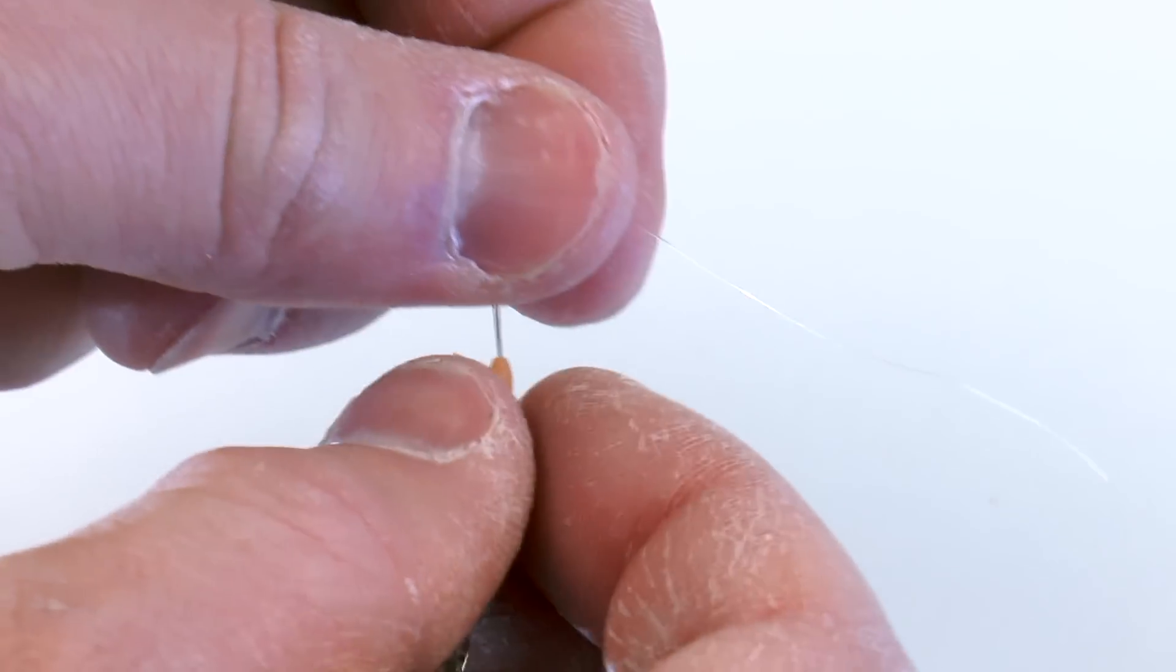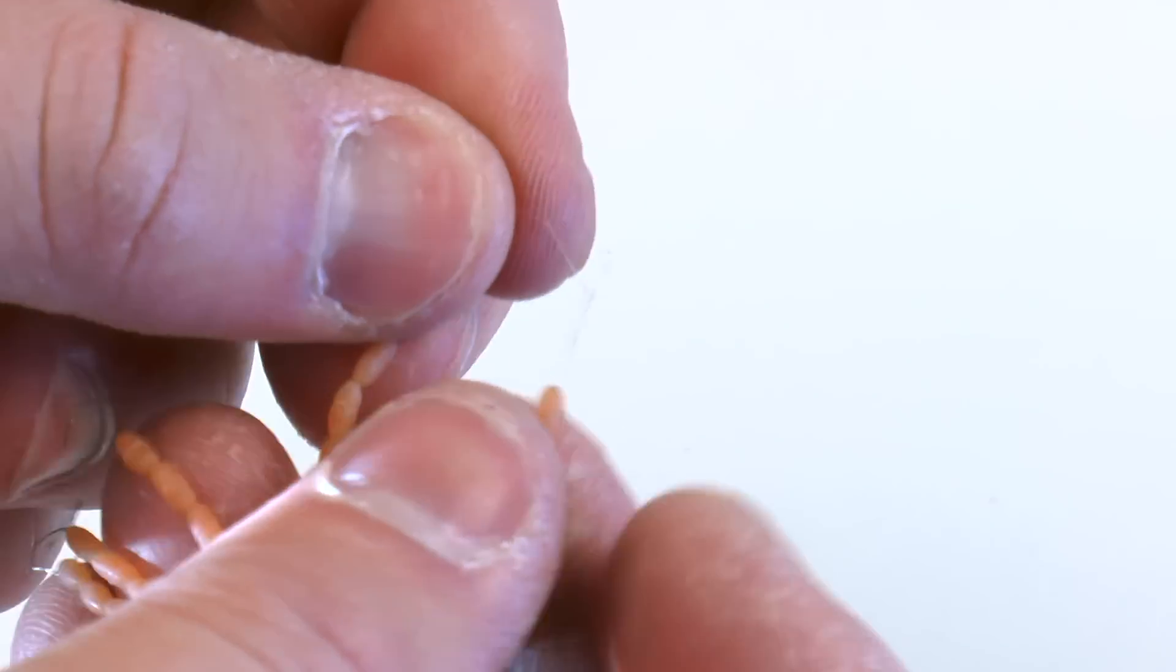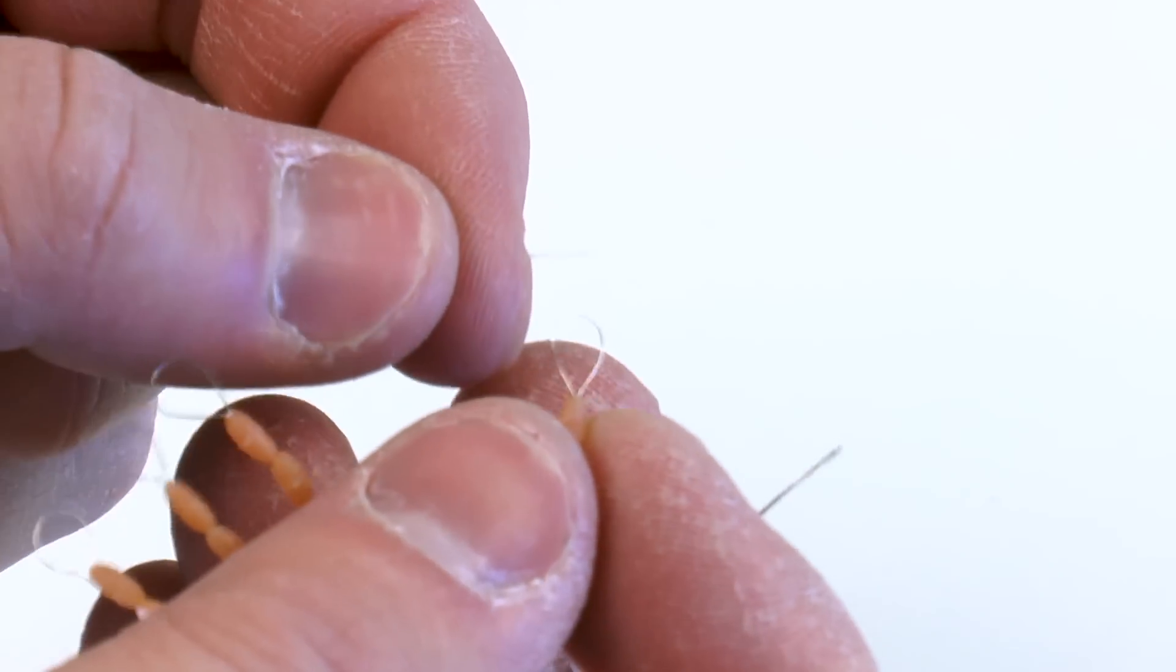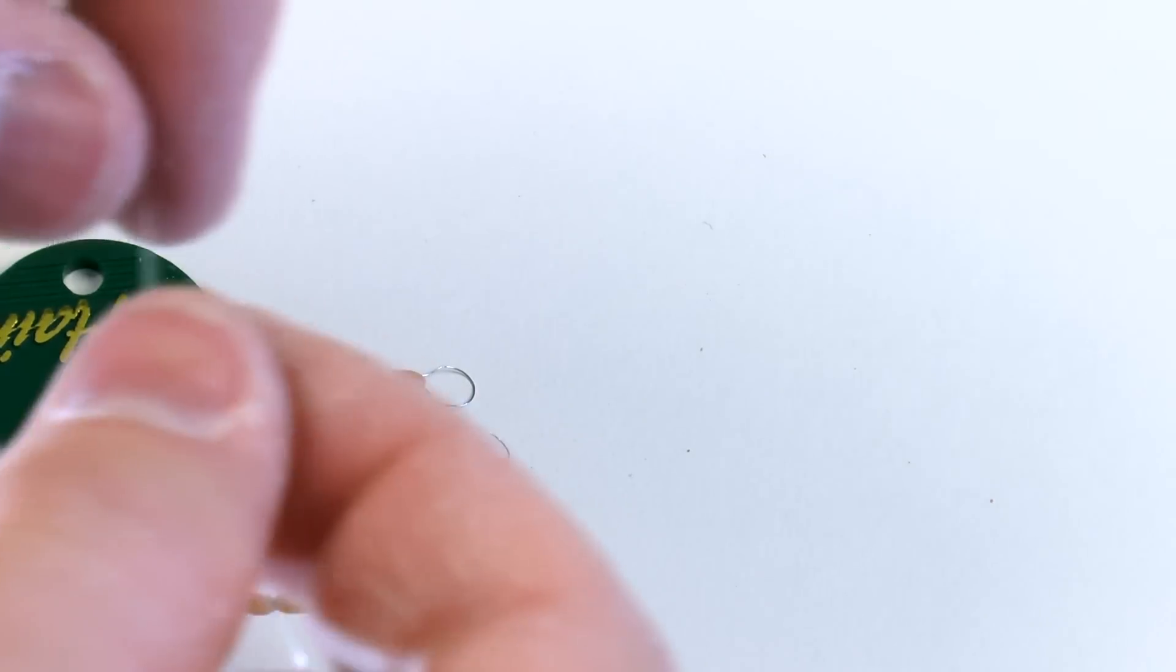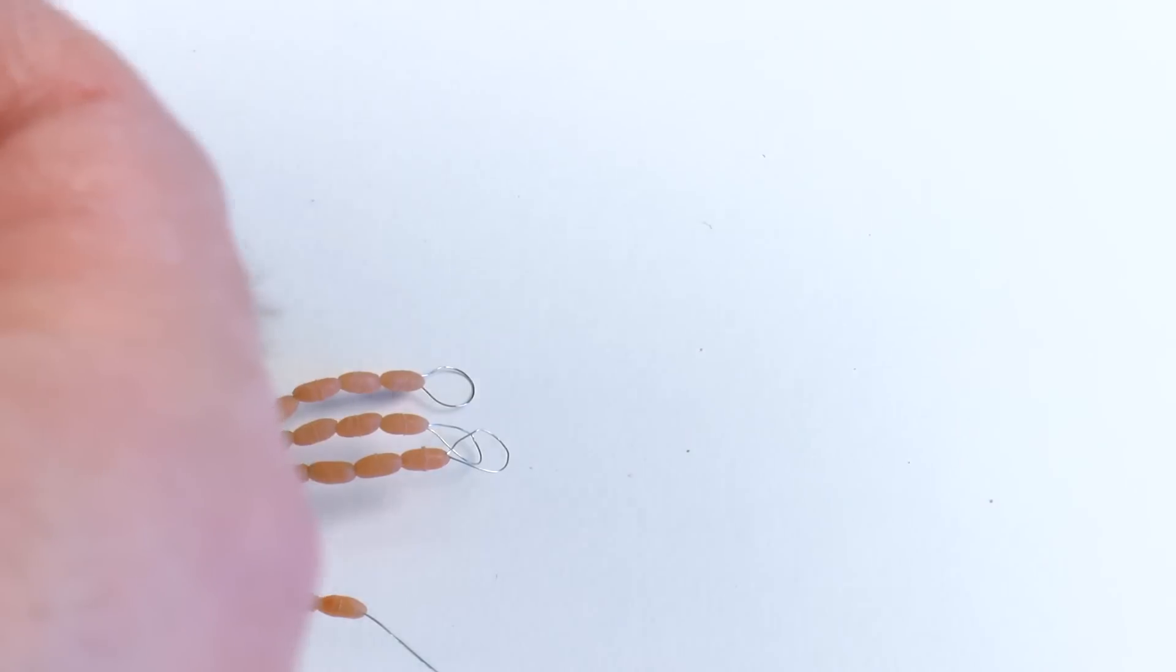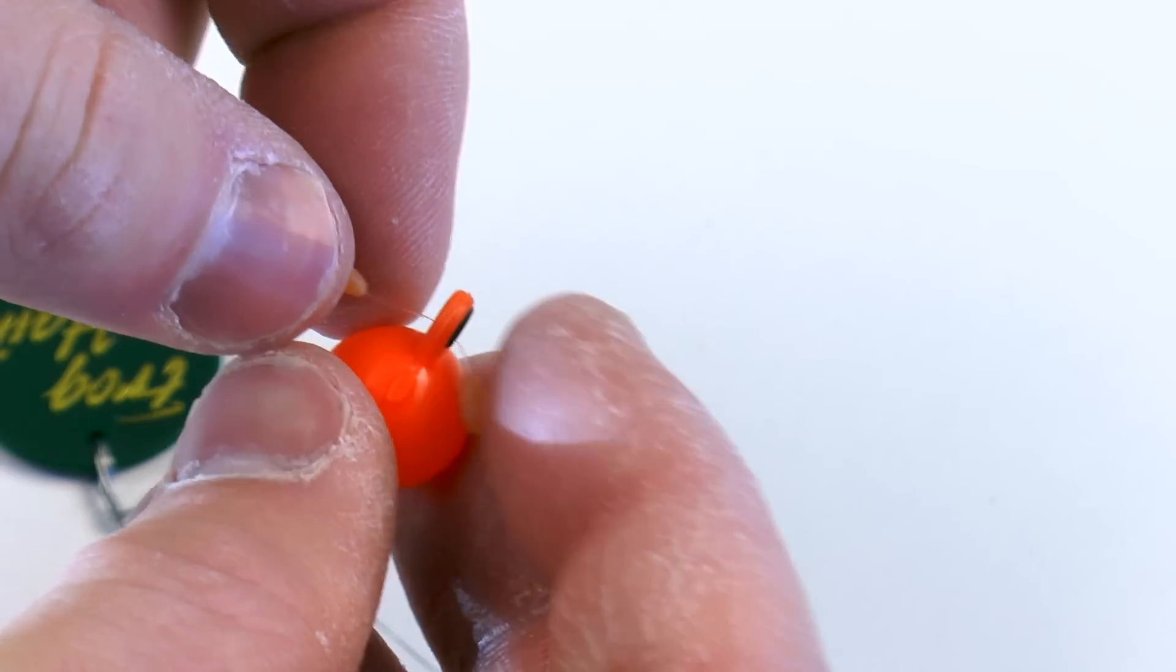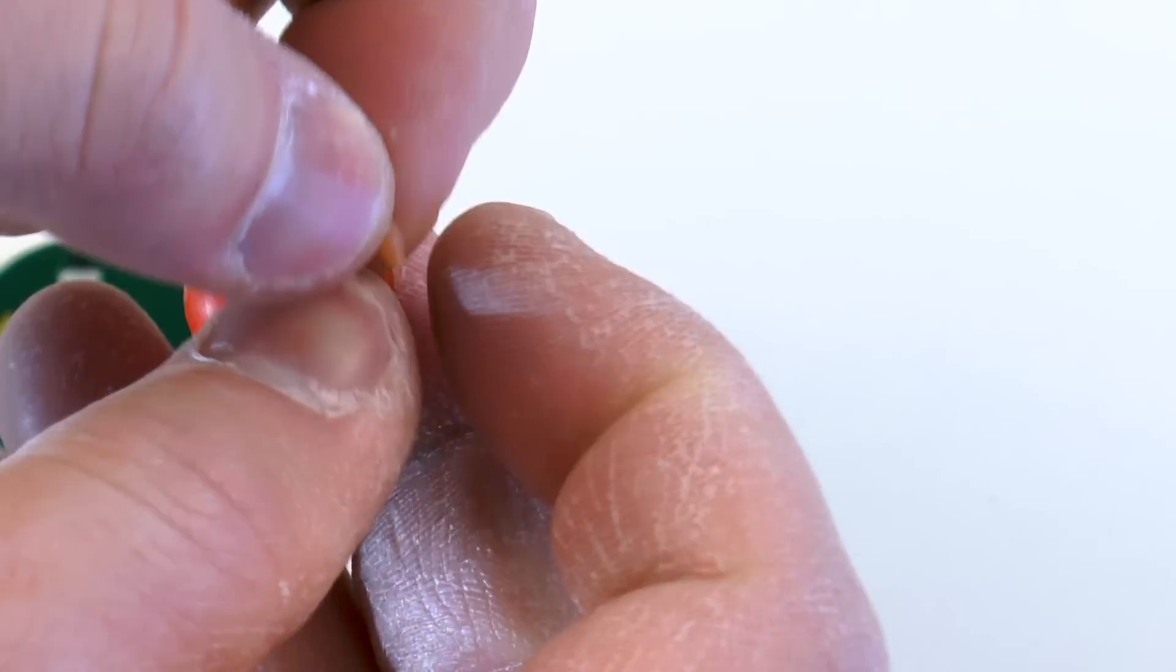Now the next thing we're going to do is we're going to take the threader again and we're just going to repeat the same process where I just pull on one of the retainers. Oh, my indicator slid over one of the retainers. Sometimes if you pull too hard you can get the indicator to kind of jump through one of the retainers.